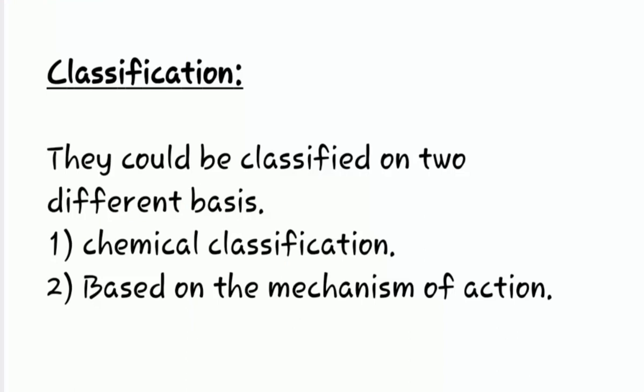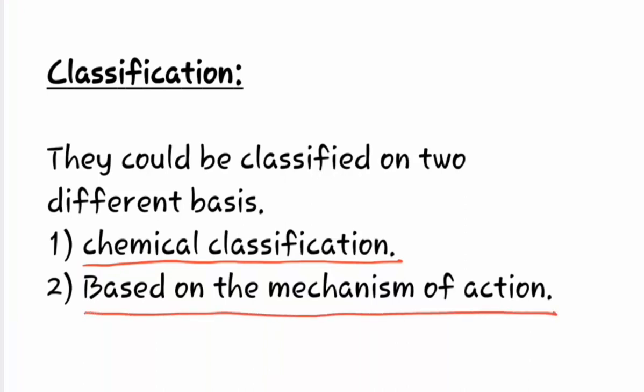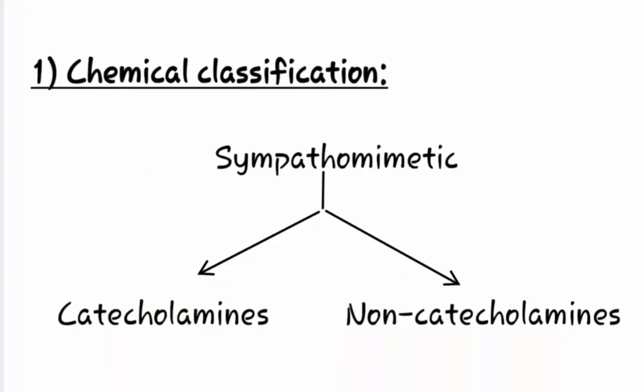Now let us see the classification of sympathomimetic drugs. They could be classified on two different bases: first is chemical classification, and the second is based on the mechanism of action. Let us first have a look at the chemical classification.